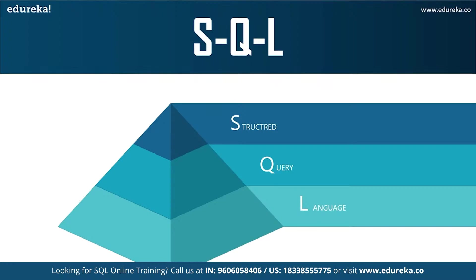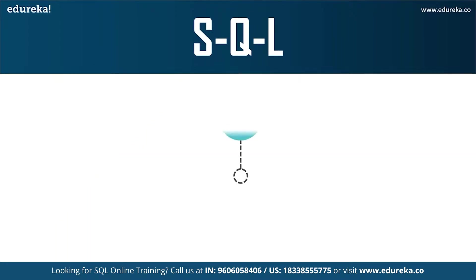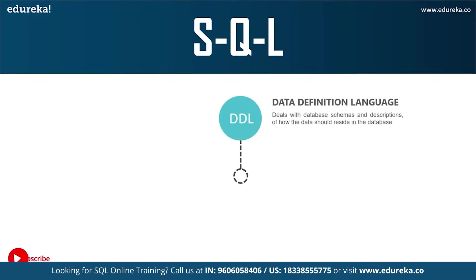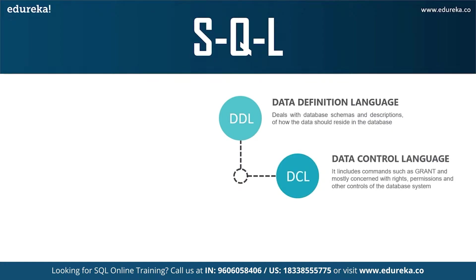SQL is the core of a relational database, used for accessing and managing the database. With the help of SQL statements, you can add columns, update or delete rows of data, retrieve information, modify the database, and perform many more actions. The different subsets of SQL commands are as follows: DDL (Data Definition Language) simply deals with the description of the database schema and is used to create and modify the structure of database objects. It allows you to perform operations such as CREATE, ALTER, and DELETE on objects. DDL is very popular and extensively used compared to other commands.